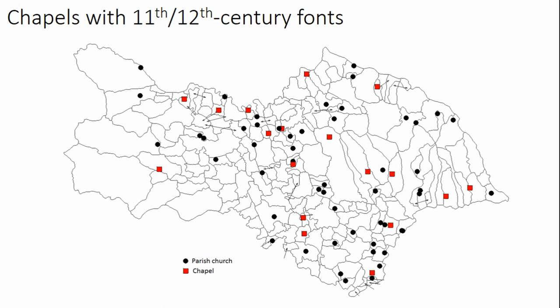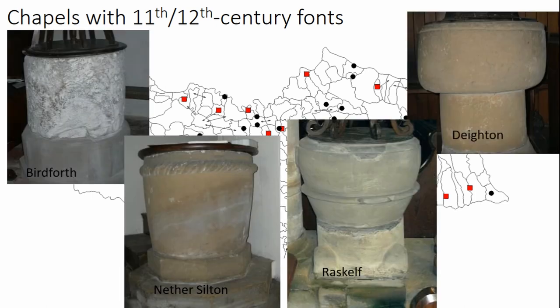54 of the early stone fonts we have are found at parish churches while 20 are located at chapels. But the relative rates of survival are interesting: about one third of parish churches retain a 12th-century font, while over half of chapels in existence by 1200 have them. There is a significantly stronger tendency for early chapels to retain their original font through the later Middle Ages compared to parish churches. Parish churches also have 12th-century fonts more often than those of any other medieval date, so preserving the original font was clearly very important to churches across the board.